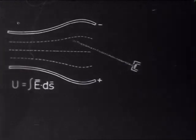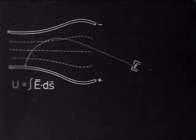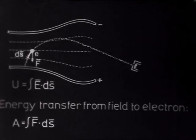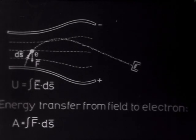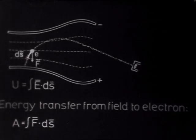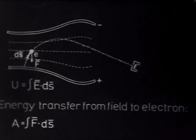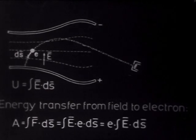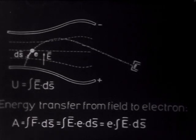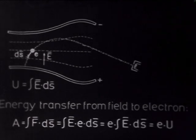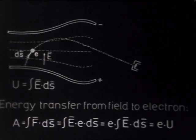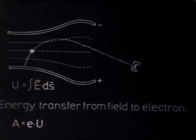An electron cannon shoots a beam of electrons into the field. We may now calculate the energy that is transferred from the field to an electron. The transfer of energy is equal to the electron's charge, multiplied by the potential diminution that the electron undergoes.